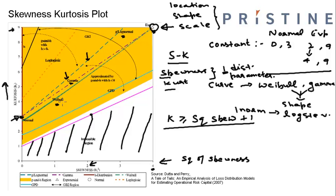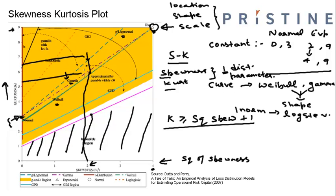Similarly, both Gamma and Weibull can be as symmetric as the normal distribution. This will happen when their shape parameter is increased above one, and the higher the shape parameter the more symmetric the two distributions will be. Another noteworthy point is that log normal distribution lies higher than Gamma and Weibull distribution. Therefore for the same skewness, log normal kurtosis will be higher than Gamma or Weibull kurtosis.